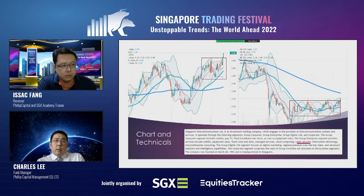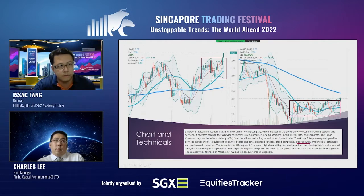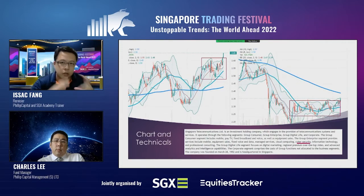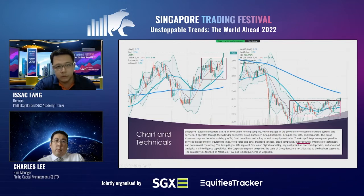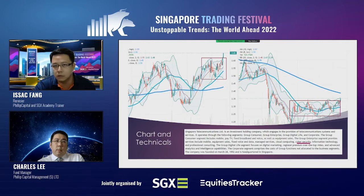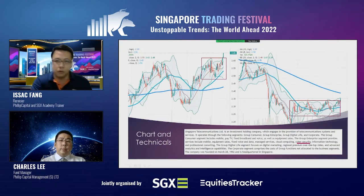I'll choose Singtel — they're bigger than StarHub, of course. From a technical point of view, in terms of candlestick patterns, this is called a sandwich — very big bar candles side by side, showing a lot of fighting between bulls and bears. From the weekly perspective, the chart has decided it wants to break out. Singtel is also a big component of the STI index, so it can be played for the index factor as well.